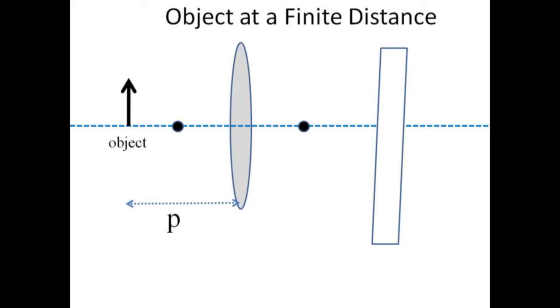A ray trace shows where the image forms when the object is not at infinity. One ray to be traced begins at the tip of the object, runs parallel to the optic axis, and then dives through the focal point as before. Another easy ray to trace passes through the center of the lens undeflected. Where these two rays intersect is where we expect a real inverted image.